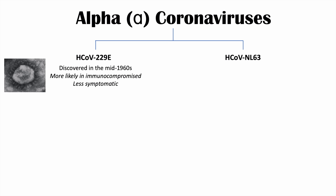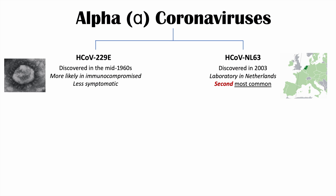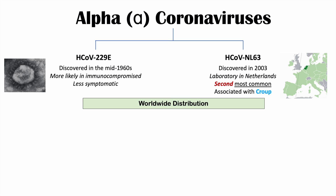The second alpha coronavirus that affects humans is HCoV-NL63, discovered in 2003 in a laboratory in the Netherlands — that's why we see NL in its name. It is actually the second most common coronavirus to infect humans and is associated with croup in children. Both of these coronaviruses have a worldwide distribution — wherever researchers have looked, they have found these viruses. They are ubiquitous and they have a seasonality, with the highest number of cases in the winter and lowest in the summer.